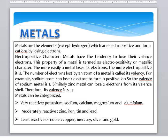Metals can be categorized by very reactive metals, moderately reactive metals, and least reactive or noble metals. Very reactive metals include potassium, sodium, calcium, magnesium, and aluminum. These are from groups 1A, 2A, and 3A. Moderately reactive metals are zinc, iron, tin, and lead. These are elements from the d-block. Least reactive or noble metals include copper, mercury, silver, and gold. These are also known as inert metals.